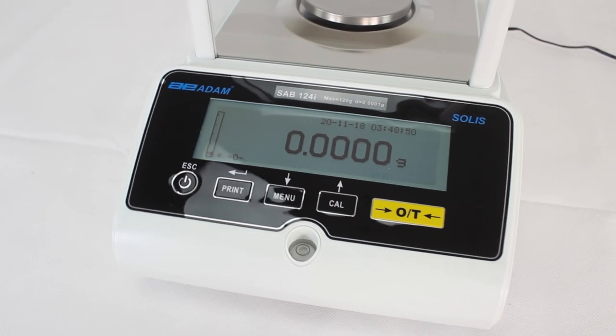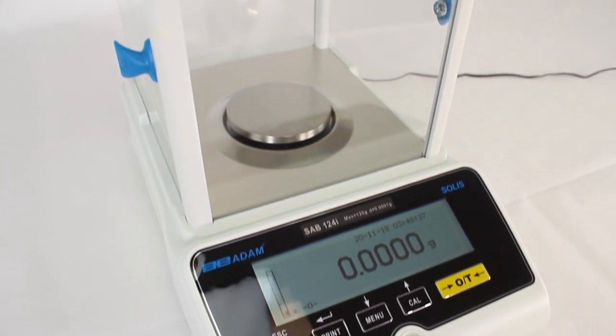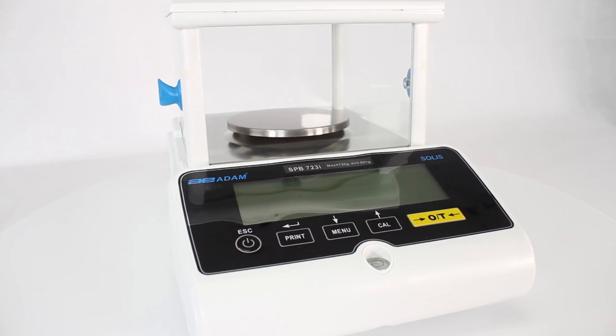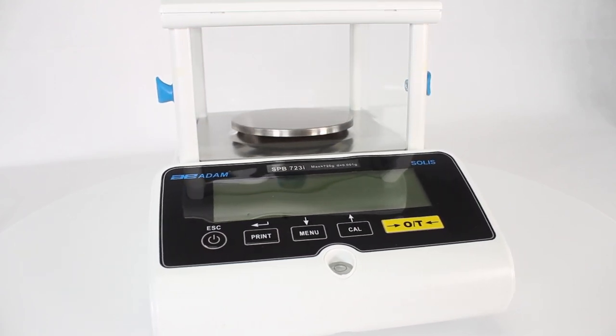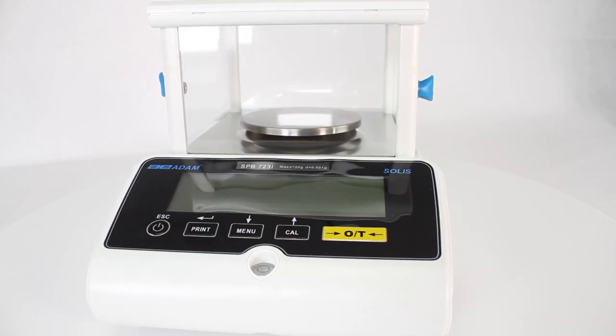Dual-range semi-micro models boast capacities of 120 grams and 220 grams, with readabilities of .01 milligram in the fine range. Salus offers the unique combination of high capacity and analytical readability.